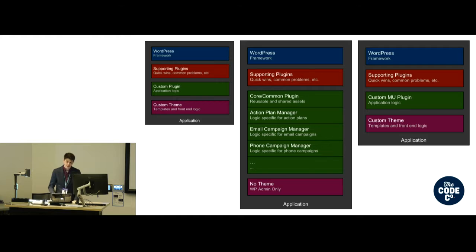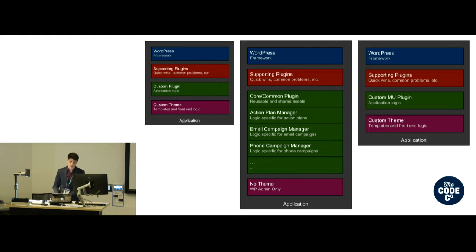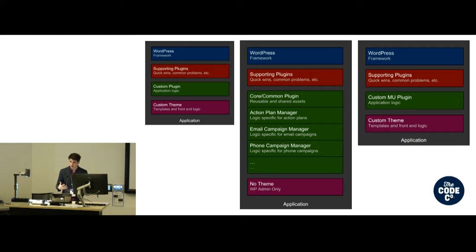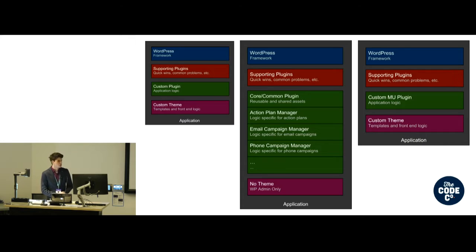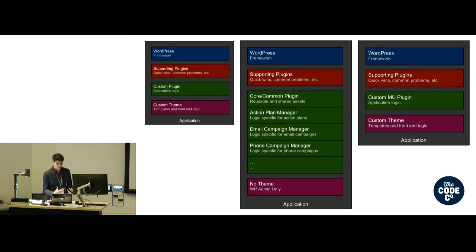The next major project was an overhaul of an existing subscription-based membership system, where we had to redo the entirety of the membership system but leave the front end intact. This time we kept the multiple plugin approach but opted to use MU plugins instead. An MU plugin — MU stands for 'must use' — these are essentially plugins that you can't switch on and off; they are always running. As part of this, we introduced a consistent directory structure across each plugin. And then finally for that Christmas seafood example, we just had a single MU plugin storing all the application logic with all front-end templating sitting inside a custom theme.